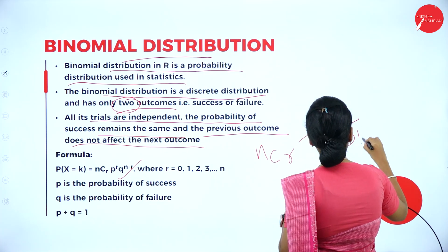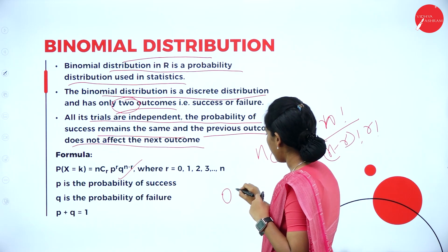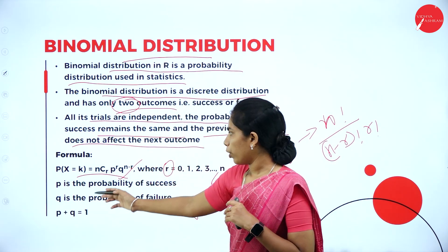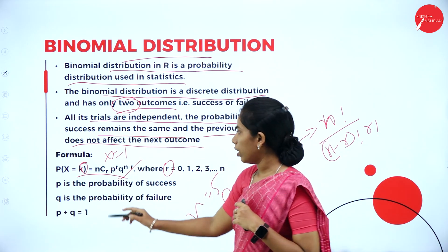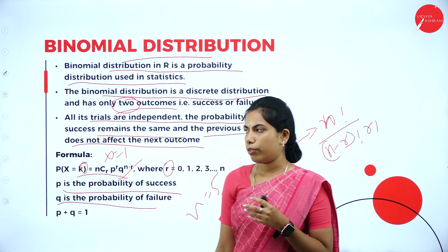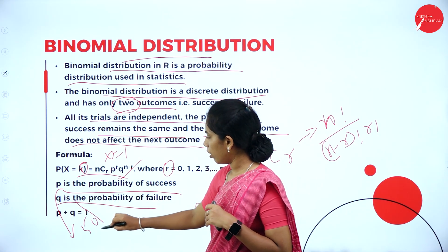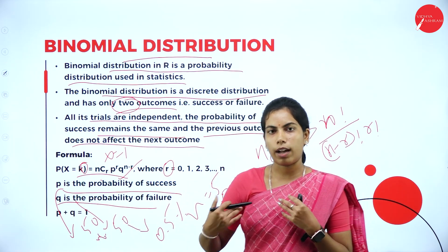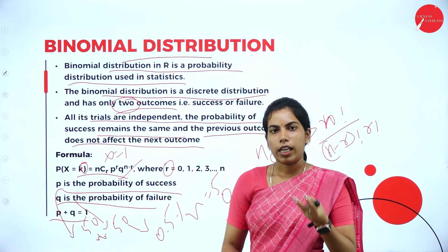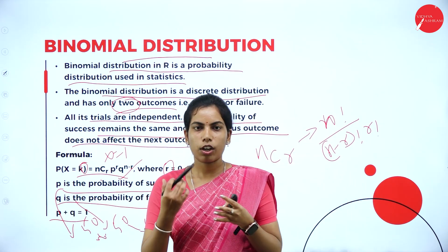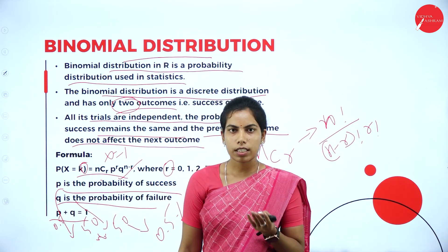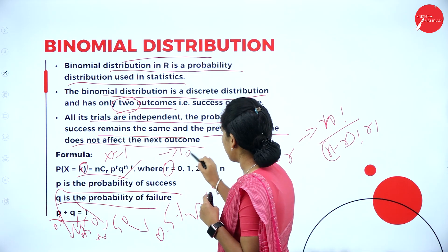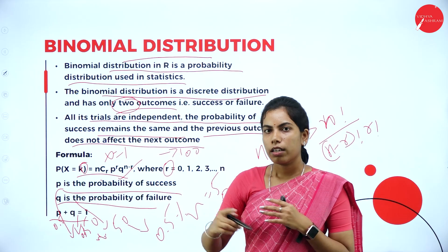NCR is N factorial divided by (N minus R) factorial into R factorial. For example, outcomes are 0, 1, 2, 3 for N, and the number of tries N is 5. The probability of X equals K equals 1. P is the probability of success and Q is the probability of failure. P is 0.5 (50%) and Q is 0.5 (50%). P plus Q equals 1. For example, if I flip a coin, there is 0.5 probability of success and 0.5 of failure. If getting a head has a 75% chance, then getting a tail has a 25% chance.